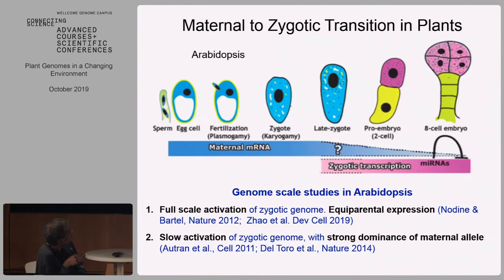What about plants? Much less has been done on plants, but in recent years it has received quite a bit of attention. Most of the work has been done in Arabidopsis, the model system of choice. But it has led to somewhat inconclusive conclusions. There are two schools of thought: one is full-scale activation of the zygotic genome right after fertilization with equiparental expression; the contrarian view is slow activation with a strong dominance of the maternal allele.